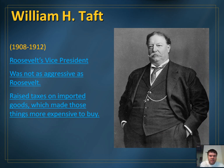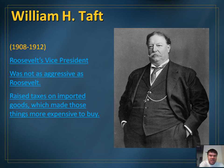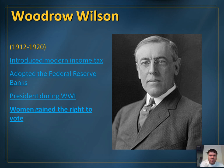After Roosevelt served his two terms, William Howard Taft, Roosevelt's vice president, was elected president. But Taft was not as aggressive as Roosevelt, and he raised taxes on imported goods, making them more expensive. Roosevelt was so upset with Taft that he decided to run for president again in 1912 — the first time a president had run for a third term. That election also included Woodrow Wilson as a candidate. Because Republicans were divided between Taft and Roosevelt, Woodrow Wilson was able to win more electoral votes and became president from 1912 to 1920.